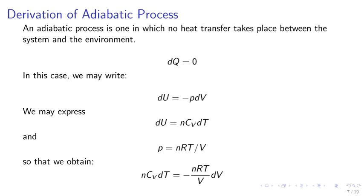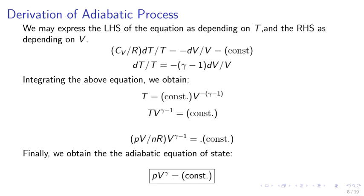Derivation of an adiabatic process. An adiabatic process is one in which no heat transfer takes place between the system and the environment. So we would have DQ equals 0. In this case, we may write DU equals negative PDV. We may express DU equals NCV DT and P equals NRT over V, so that we obtain NCV DT equals negative NRT over V DV.